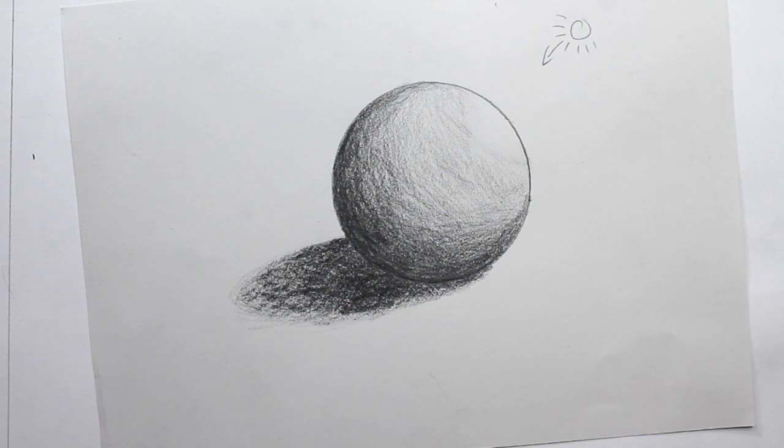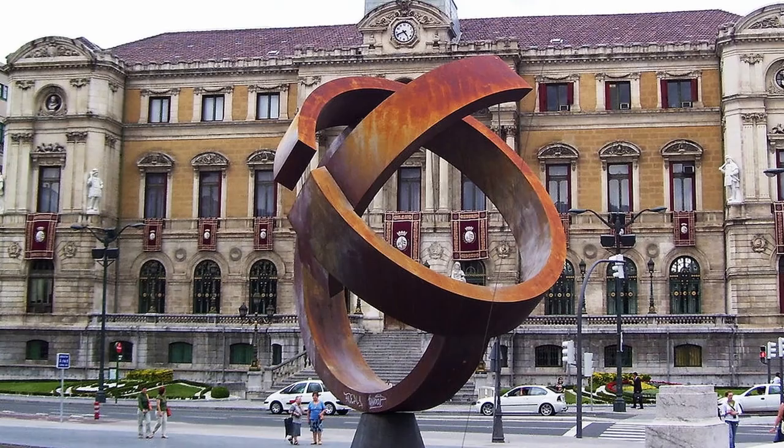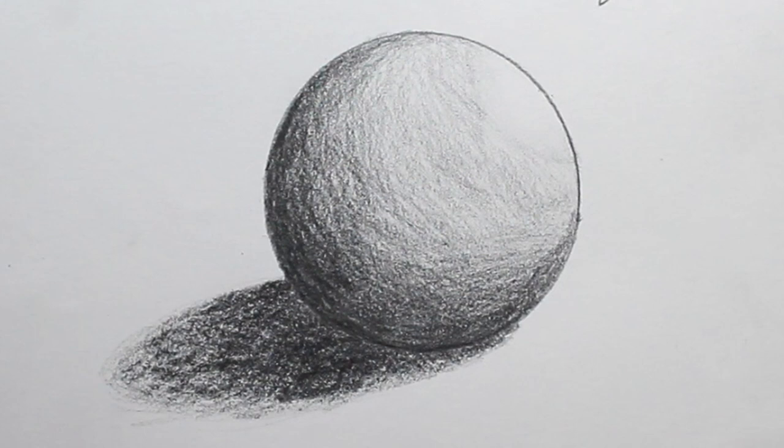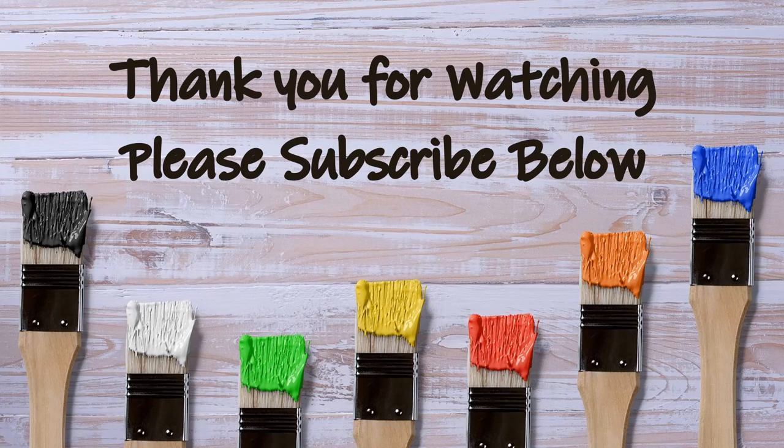So remember, form refers to 3D objects that have height, width and depth. We can create real forms in real life, but we can also create these implied forms when using other visual elements like line and tone to suggest that depth. That's it for our video on form. If you'd like to see more of our videos, make sure you hit the subscribe button. And as always, thank you very much for watching.